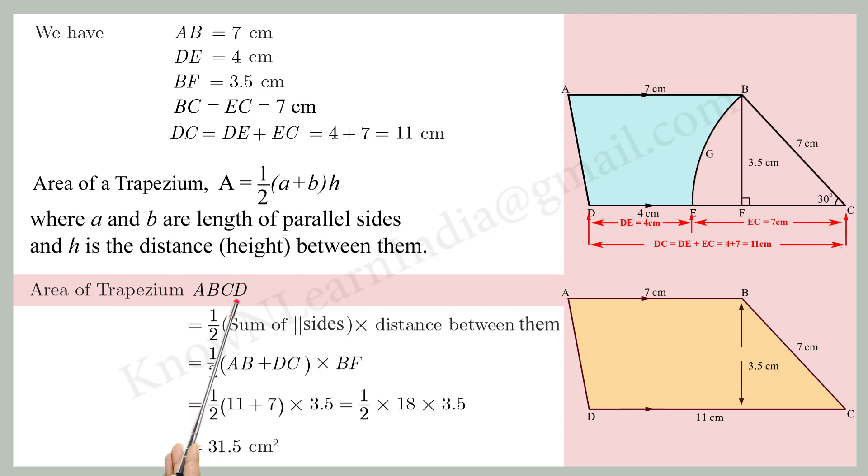Area of trapezium ABCD equals half times sum of parallel sides times distance between them, which equals half times (AB plus DC) times BF equals half times (7 plus 11) times 3.5 equals half times 18 times 3.5 equals 31.5 cm squared.